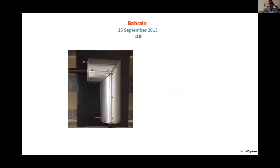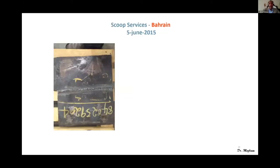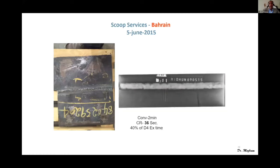Here are practical demo images from different countries. In Bahrain in 2015, using conventional radiography it took four minutes to get the images, but using computerized radiography we got the shot in 60 seconds only — almost 75% time saving compared to conventional radiography. In another company in Bahrain on June 5, 2015, for weld inspection, the conventional method took two minutes, but with CR we got very clear images in 30 seconds only — almost 40% of the conventional exposure time.